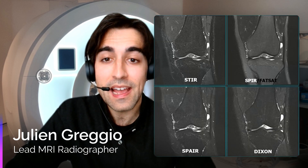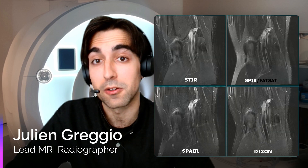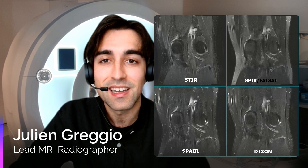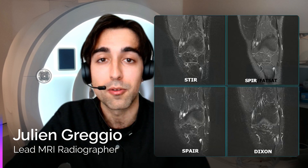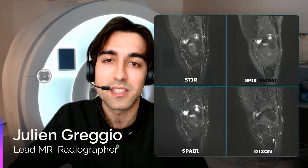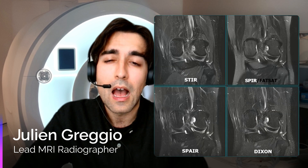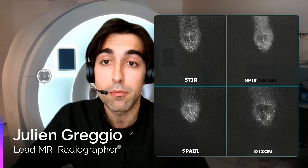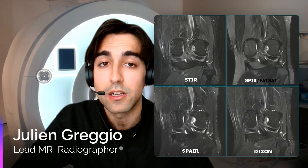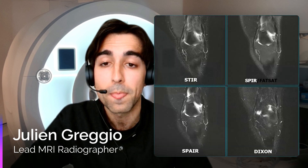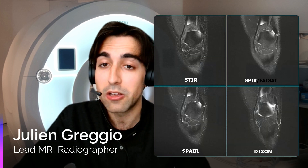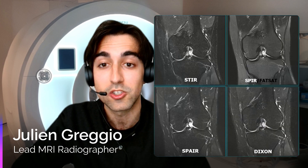Quick recap of what we have seen today: STIR, FATSAT, SPIRE, or Dixon — which one do you choose and why? Is there a specific scenario where you recommend one over the others? Share your thoughts in a comment below, that would be extremely useful for the entire community. I personally believe that, as previously mentioned, Dixon has some very strong advantages, not only when it comes to MSK imaging but also in a broader spectrum of MRI examinations. However, STIR sequences are very useful and can save us in a multitude of situations when we struggle to achieve a uniform fat suppression. SPIR personally I do not use much, but again, it depends on the type of scanner you're using.